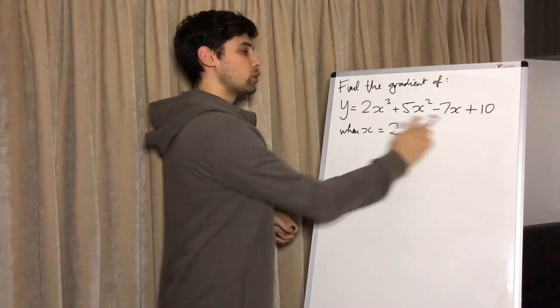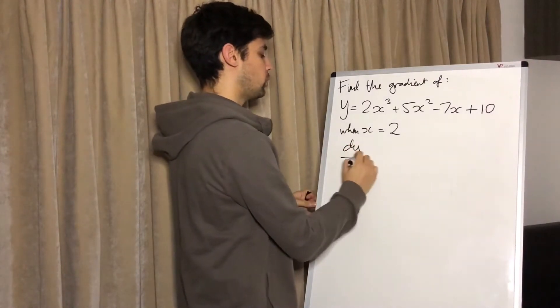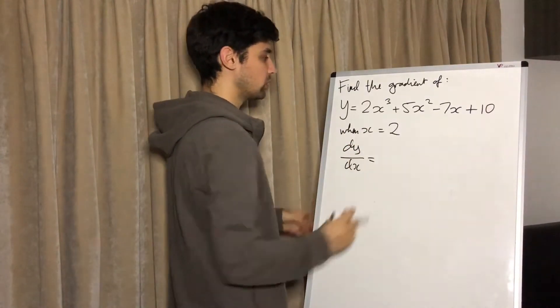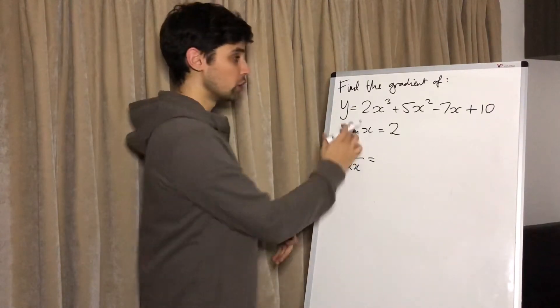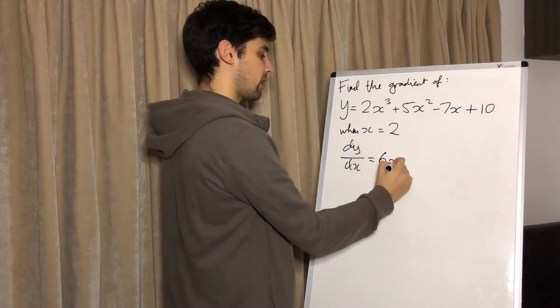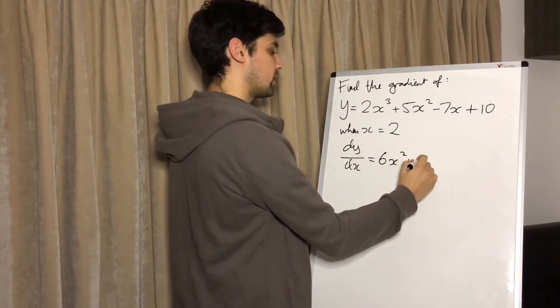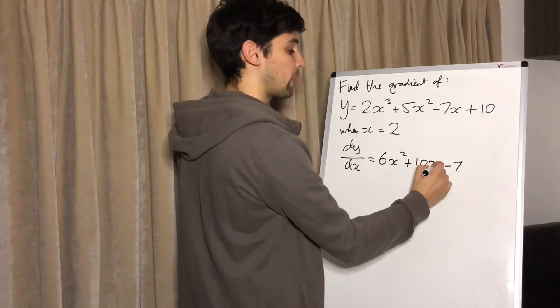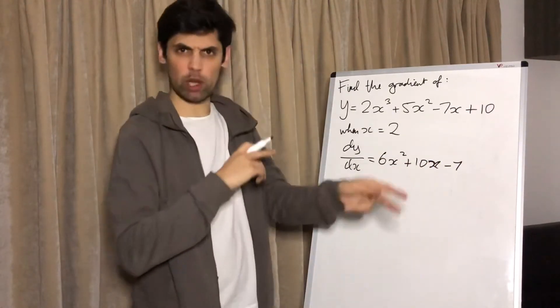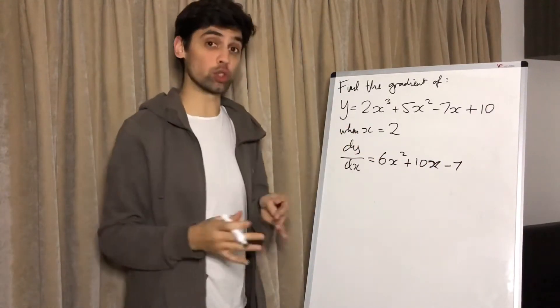So y equals this, dy/dx equals... Now remember our rules: bring the power down in front, minus 1 from the power. So doing that to this is going to create 6x² + 10x - 7. If you're unsure about how any of that works, go and check out one of my previous videos on the basic rules of differentiating.